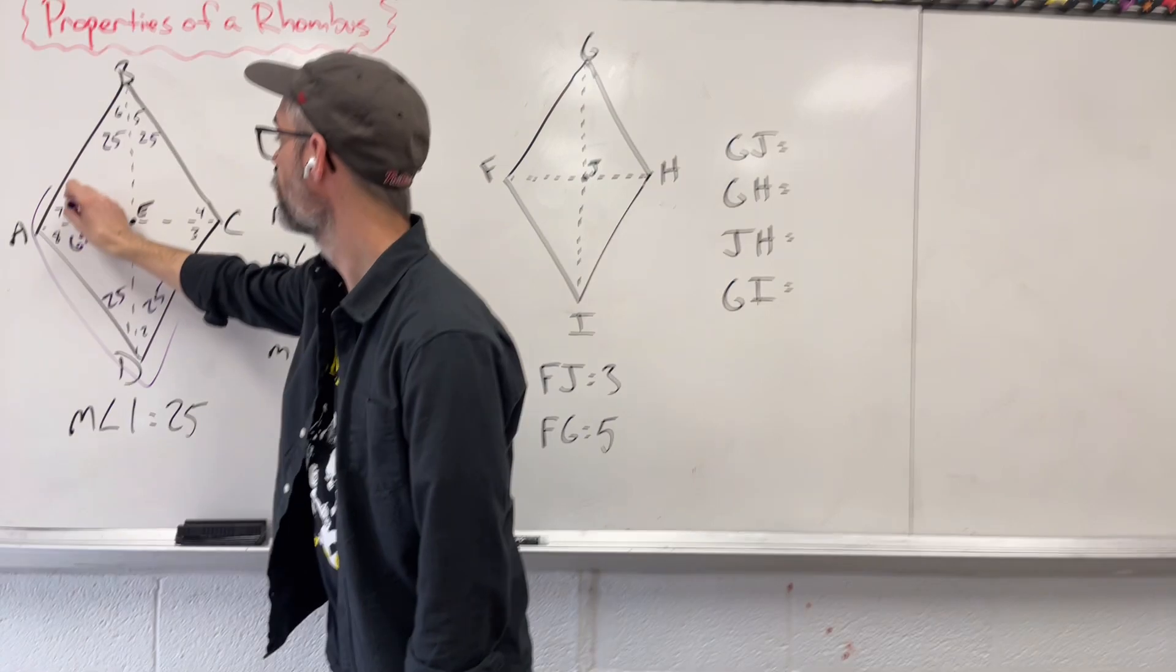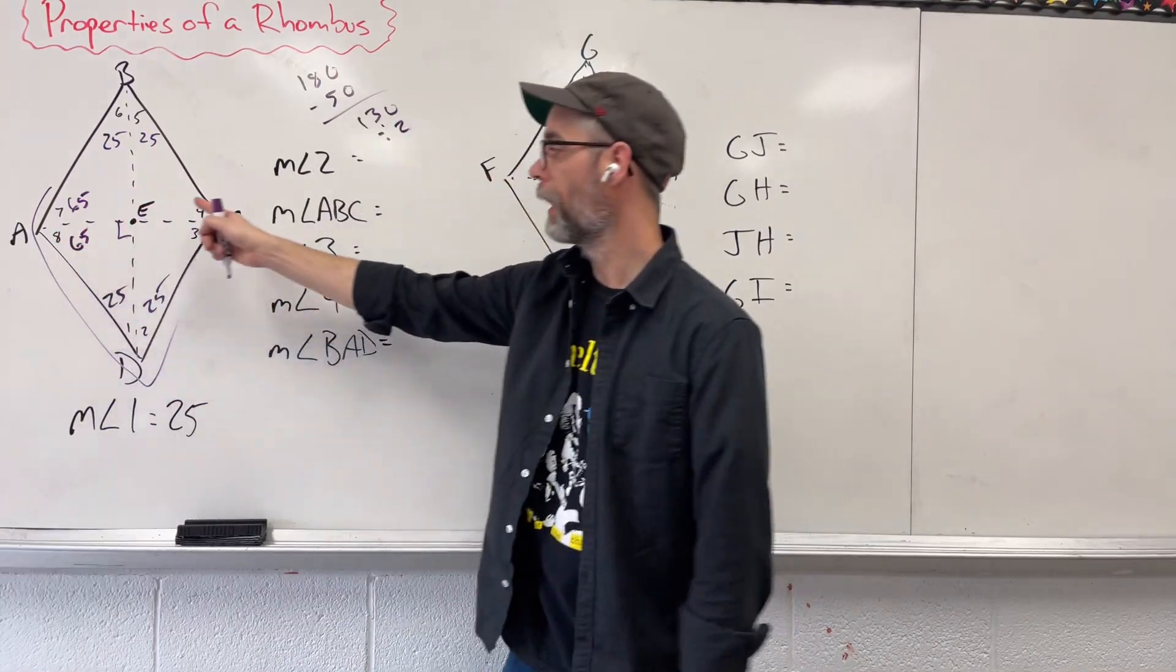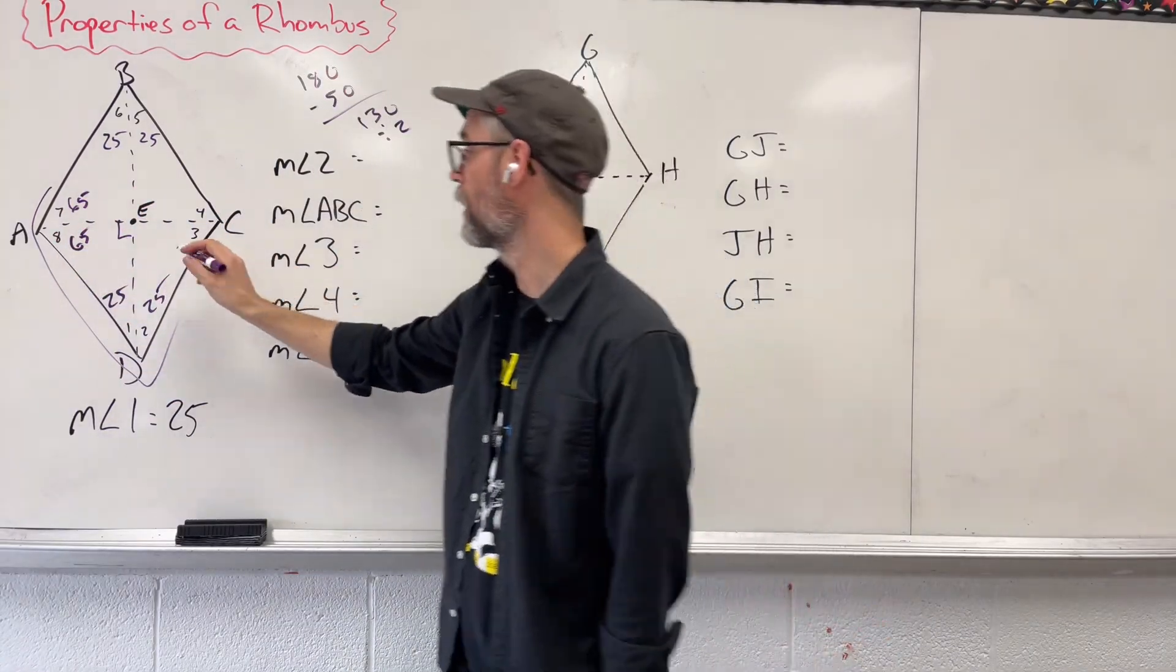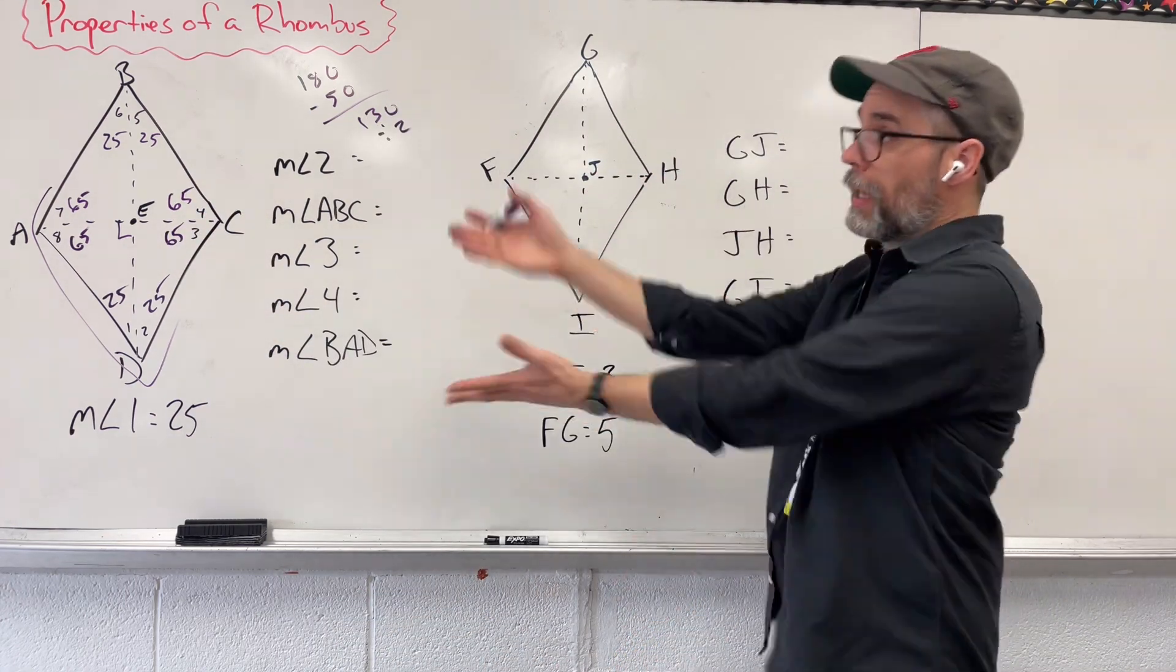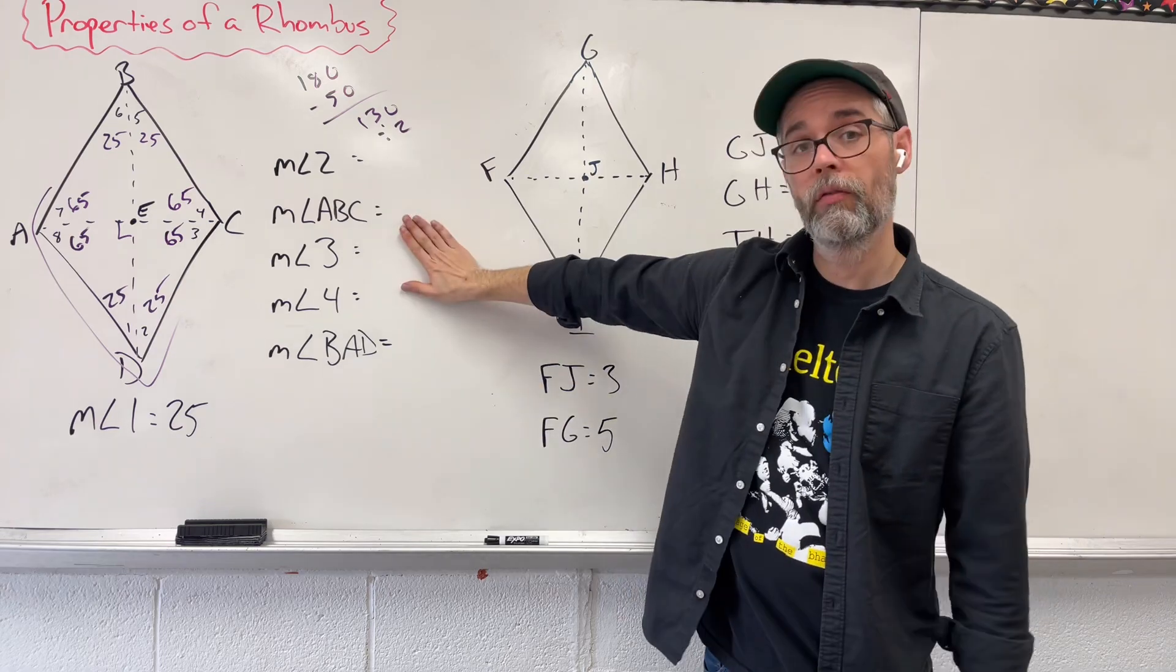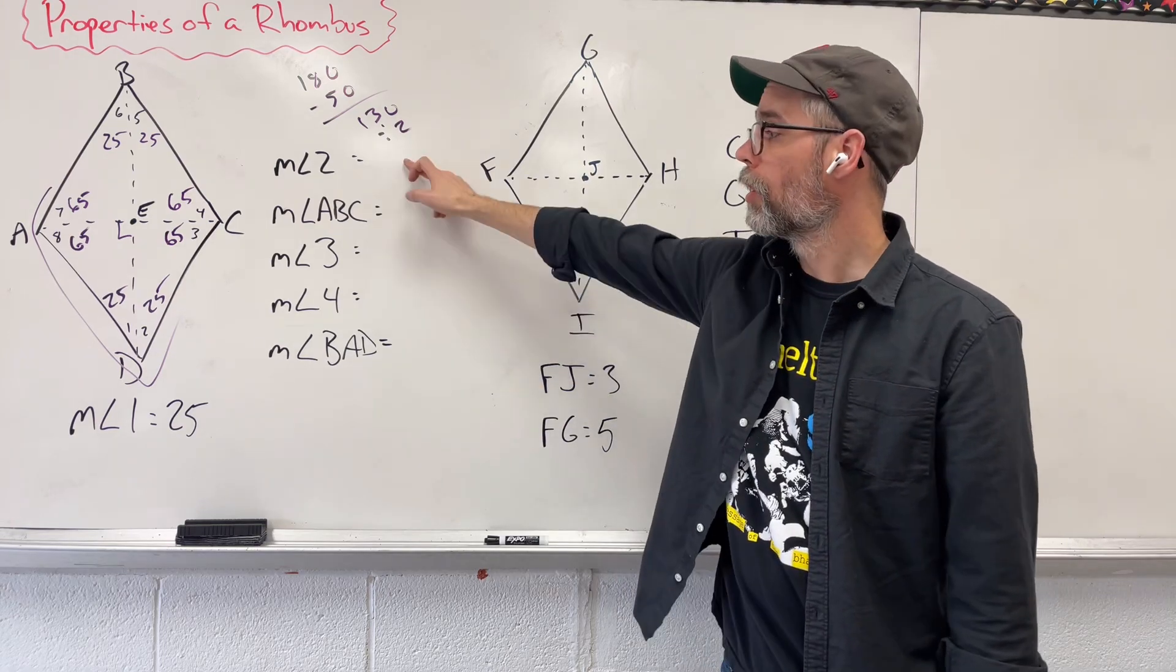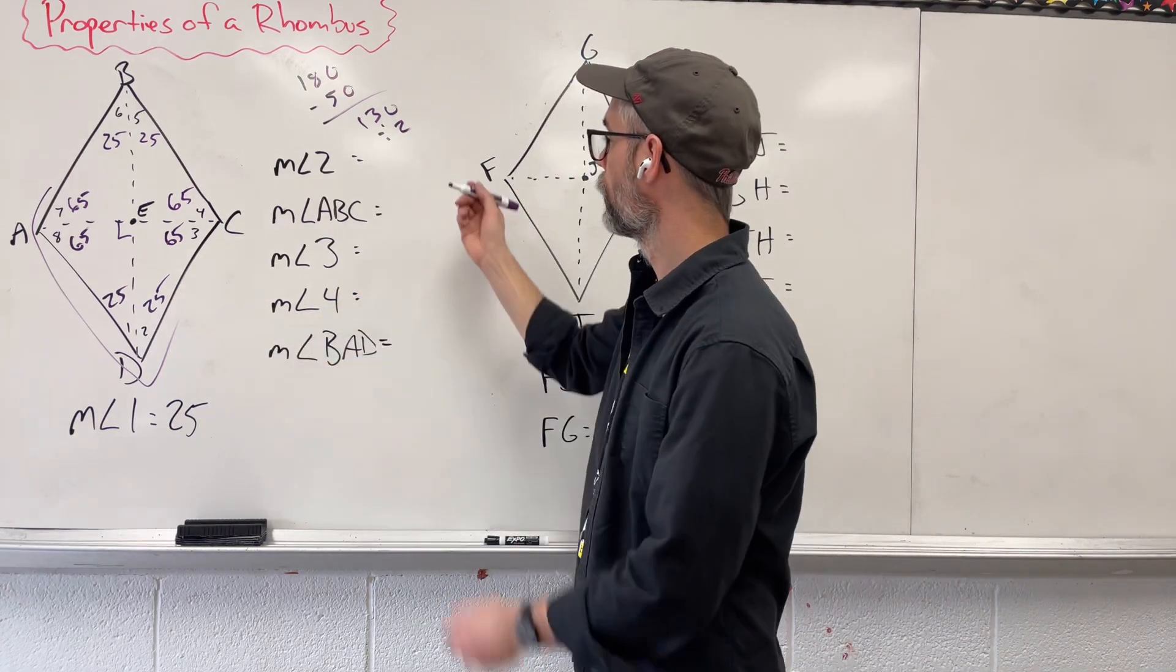65 and 65. And now our angles opposite that have to be the same thing. So we say 65 and 65 again. So we labeled out all of our angles. Let's put them down with what we're looking for. Measure of angle 2, all the way down there, 25.